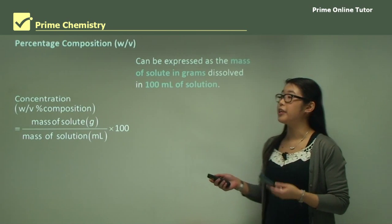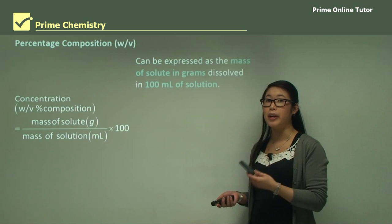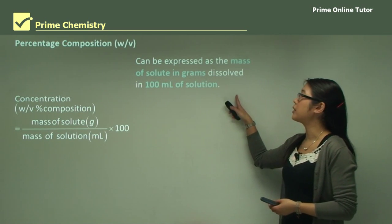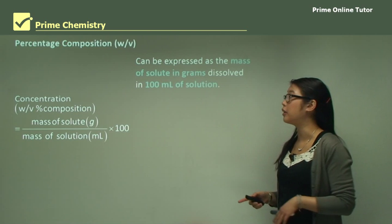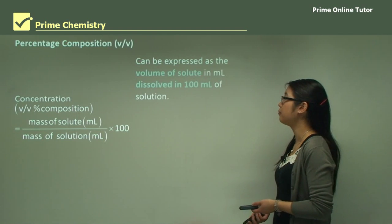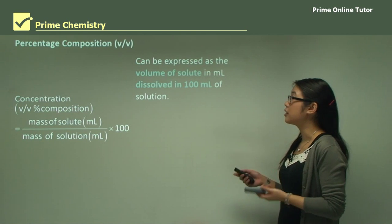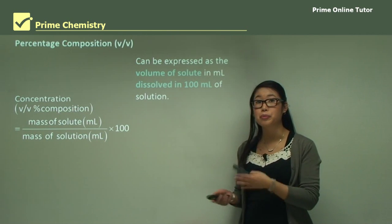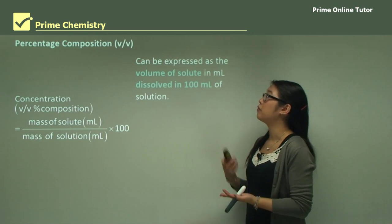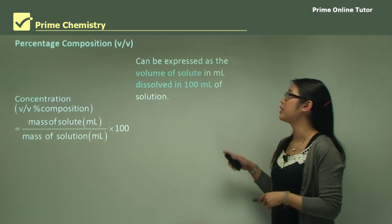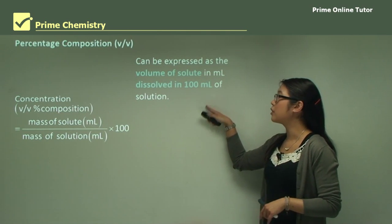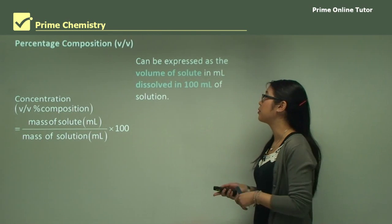Another one is weight-to-volume. So instead of using the weight of the solution, we're using the volume of it. It's expressed as the mass of solute in grams dissolved in 100 mils of solution. Similarly, volume-to-volume: first was weight-to-weight, then weight-to-volume, then volume-to-volume — expressed as the volume of solute in mils dissolved in another 100 mils of solution.